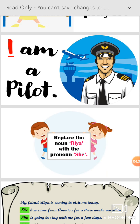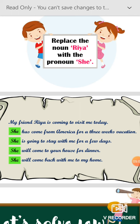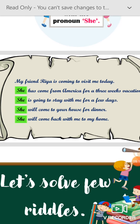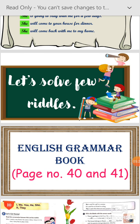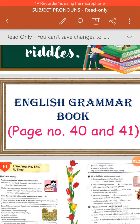Now let's do an exercise: replace the noun Ria with the pronoun 'she.' My friend Ria is coming to visit me today. She has come from America for a three-week vacation. She is going to stay with me for a few days. She will come to your house for dinner. She will come back with me to my house. In place of Ria, we put 'she' throughout.